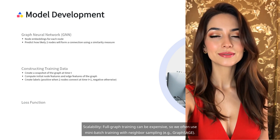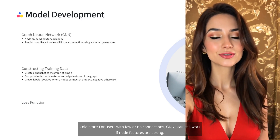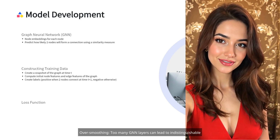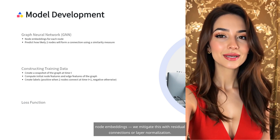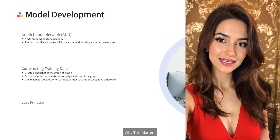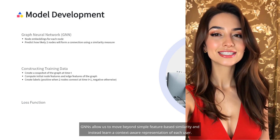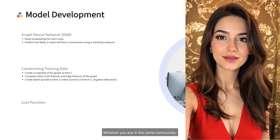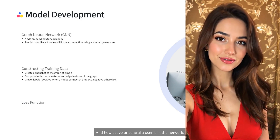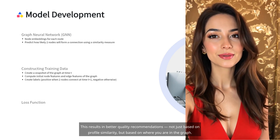Key challenges and considerations: Scalability — full graph training can be expensive, so we often use mini-batch training with neighbor sampling (e.g., GraphSAGE). Cold start — for users with few or no connections, GNNs can still work if node features are strong. Over-smoothing — too many GNN layers can lead to indistinguishable node embeddings, which we mitigate with residual connections or layer normalization. GNNs allow us to move beyond simple feature-based similarity and instead learn a context-aware representation of each user, capturing subtle structural cues like who your friends' friends are, whether you are in the same community, and how active or central a user is in the network.